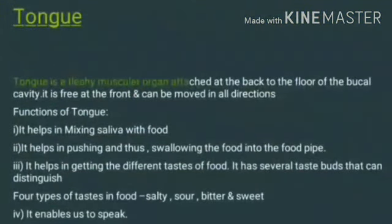Now about the tongue. The tongue is a muscular organ, attached at the back to the floor of the buccal cavity. The tongue helps in the movement of food, mixing saliva with food, pushing and swallowing food into the food pipe, and helps in getting different tastes of food. It has several taste buds that can distinguish four types of taste: salt, sour, bitter, and sweet. It also enables us to speak.